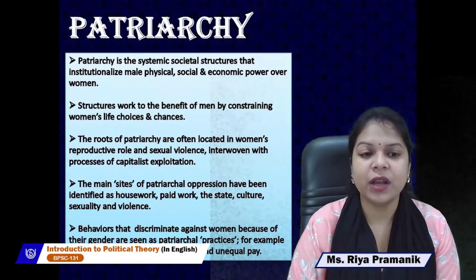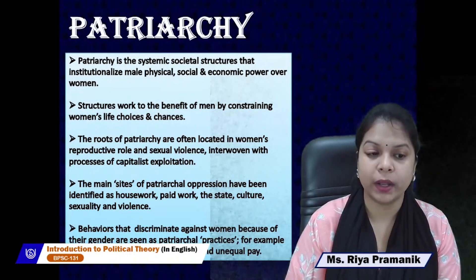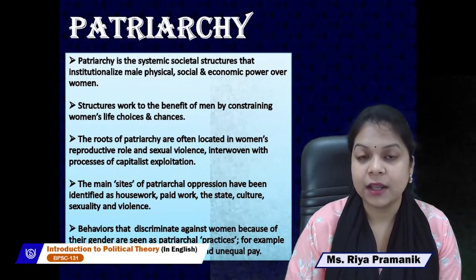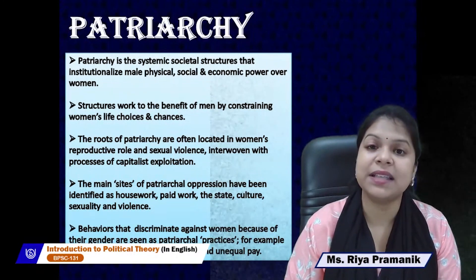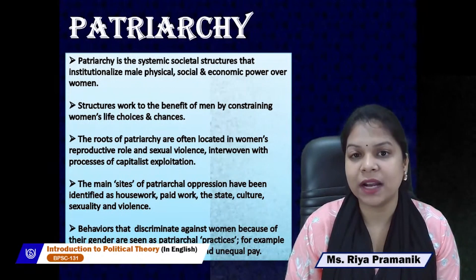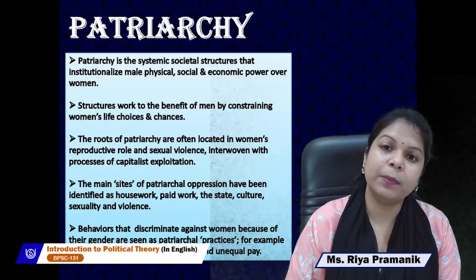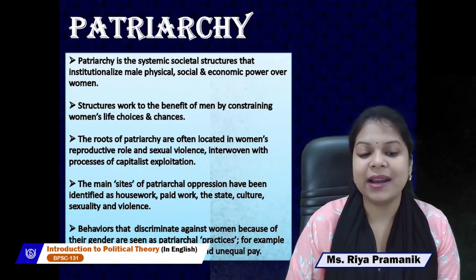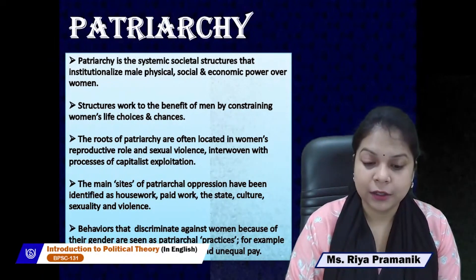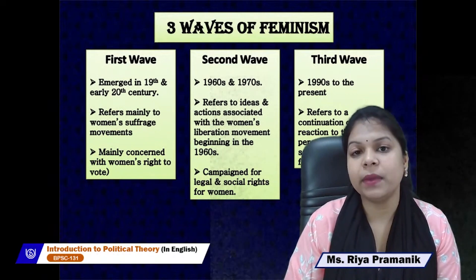Patriarchy is the systemic societal structure that institutionalizes male physical, social, and economic power over women. The rules of patriarchy are often located in women's reproductive role and sexual violence. The main sites of patriarchal operation have been identified as housework, paid work, culture, sexuality, and violence. Three waves of feminism emerged over time: the first wave in the 19th and early 20th century focused on women's suffrage; the second wave in the 1960s addressed women's liberation and social rights; the third wave from the 1990s was a continuation and reaction to the perceived failures of the second wave.